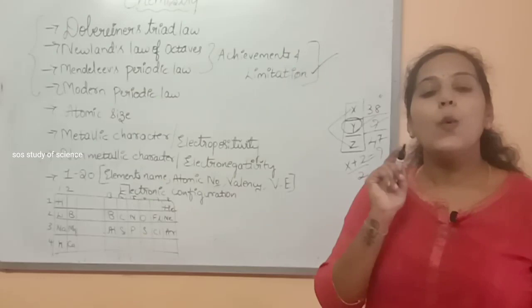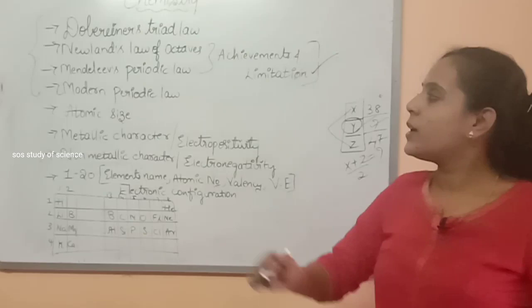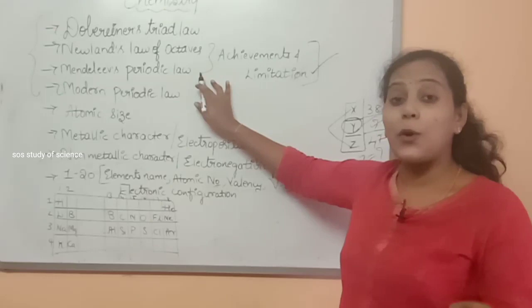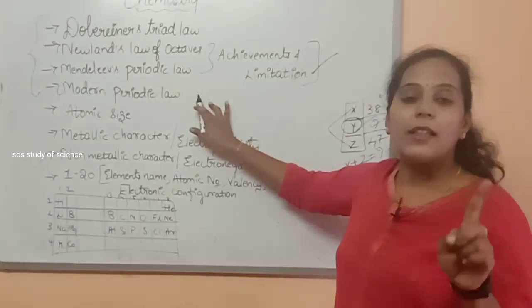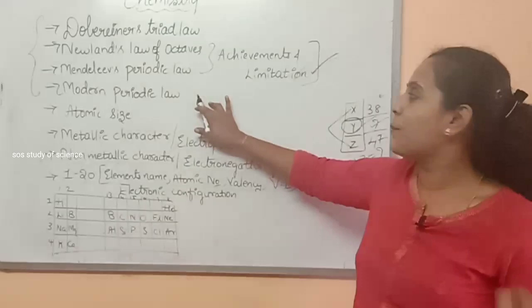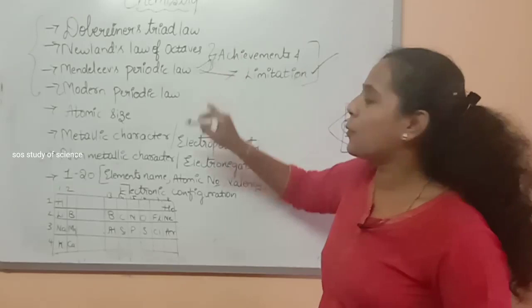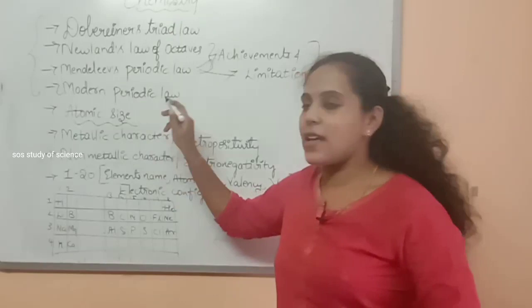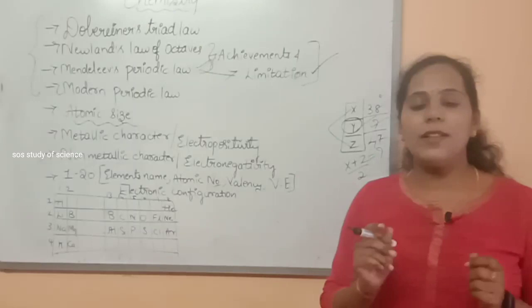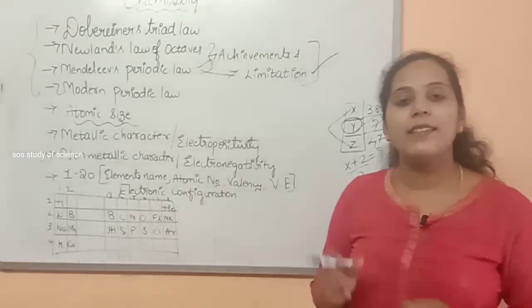For Mendeleev's Periodic Law and Modern Periodic Law, one word changes between them. Mendeleev's Periodic Law states: the properties of elements are periodic functions of their atomic mass. Modern Periodic Law states: the properties of elements are periodic functions of their atomic number. You must also know Mendeleev's achievements and limitations. Additionally, you need to know about atomic size — also called atomic radius — which is the distance from the nucleus to the outermost orbit.